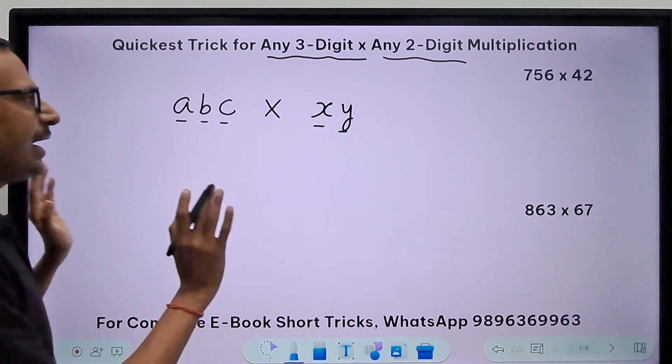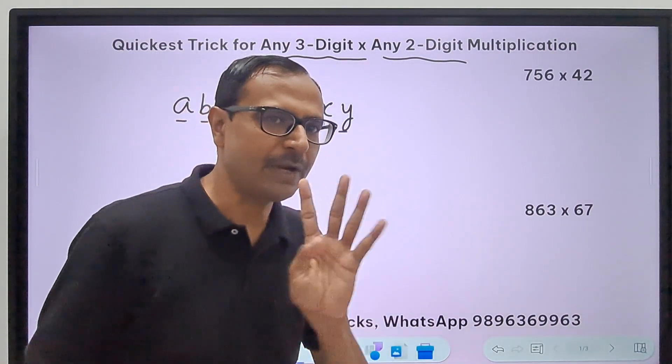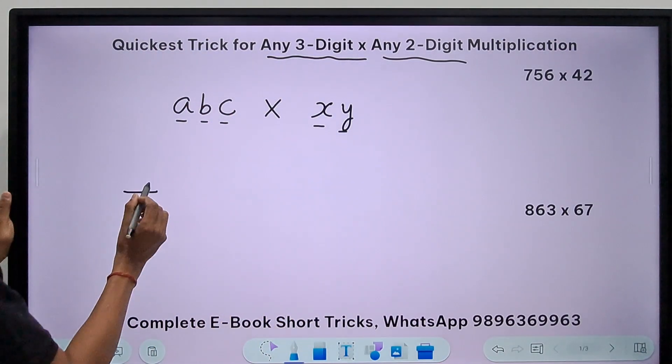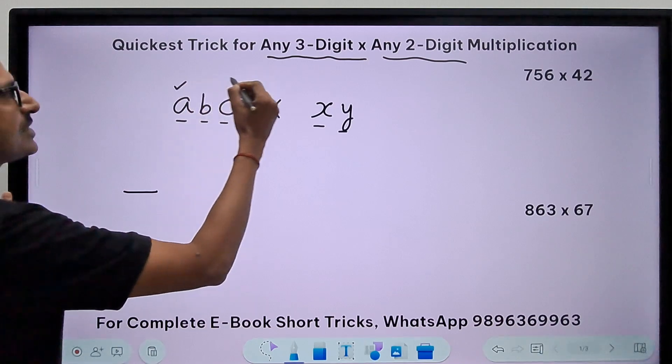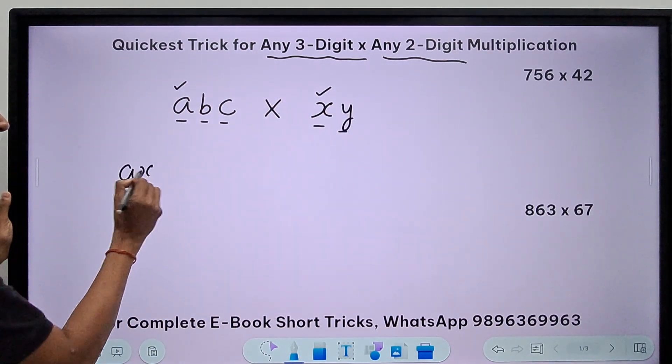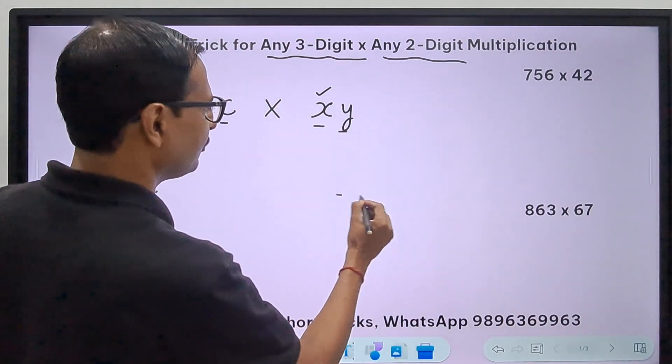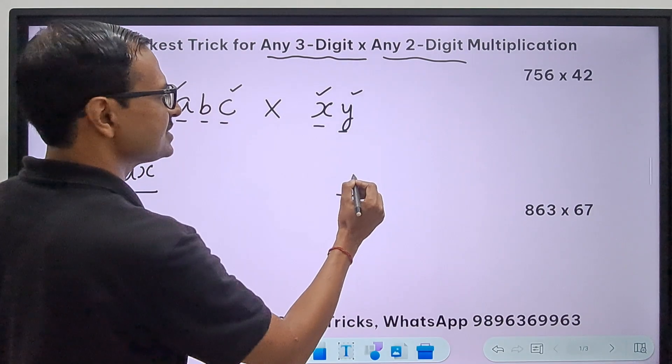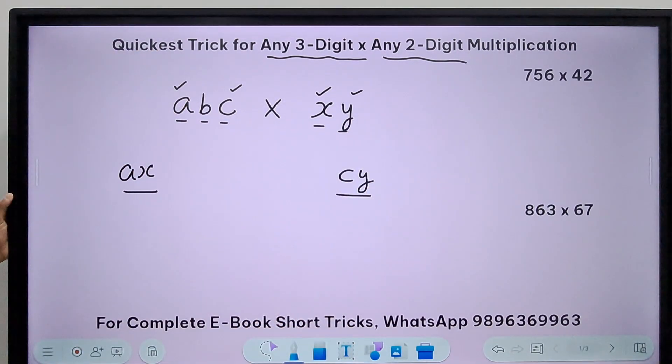I want to find the product, so I have to find out four different numbers. The first number is the product of the first here and the first here—that is a times x. The last one will be the product of the last number here and the last number here, which is c times y.